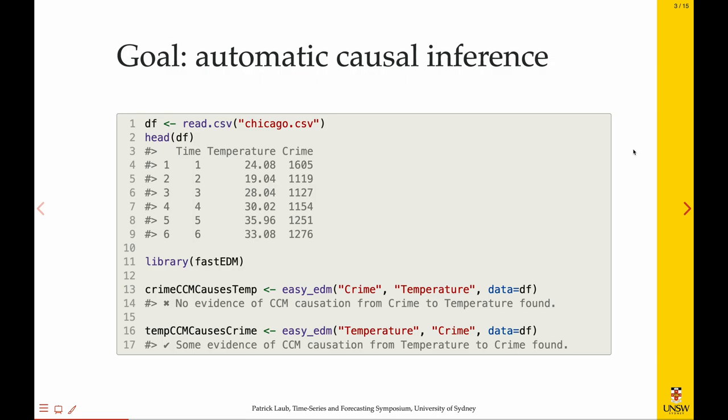On to today's talk. The goal that I have is to take a pair of time series. Here I've got daily measurements in Chicago of temperature and the number of crimes. And just to say, throw it into some software package and say, what causes what? Is there one causing the other? So our goal is to have something like, no evidence that crime causes temperature. You wouldn't expect the causation to go in that direction. But there's some evidence maybe of a link in the other way from temperature having an effect on the crime.